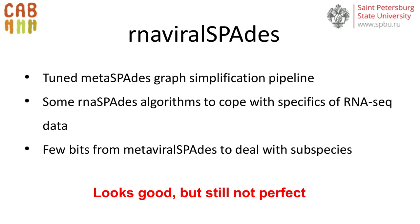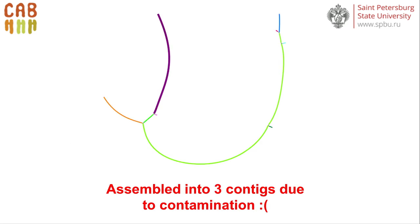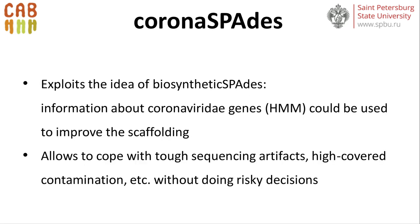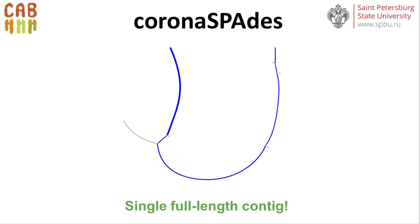I'd like to introduce you to Ginger, a divergent coronavirus we identified in a metagenomic sample from a sick cat in China. Due to contamination and high-coverage artifacts, we cannot separate the artifacts from the genome well, and the genome is assembled into three contigs. Tuning a few heuristics in the assembler wouldn't be very consistent for the high volume of assemblies we are planning. BiosyntheticSPAdes is another mode of SPAdes aimed at reconstructing biosynthetic gene clusters, using domain-specific knowledge to reconstruct the correct graph. Thus was born CoronaSPAdes — it uses HMM protein models to select the correct path through an assembly graph, thereby avoiding contaminating contigs. Now we know that each edge of the assembly graph belongs to the Ginger coronavirus and we can assemble it into a single complete genome with high confidence.